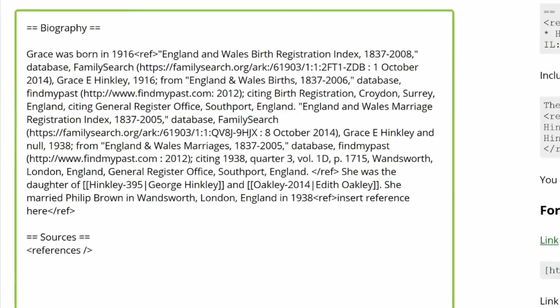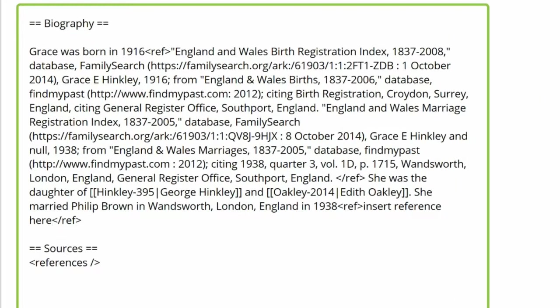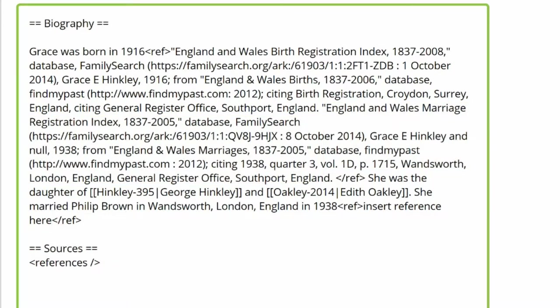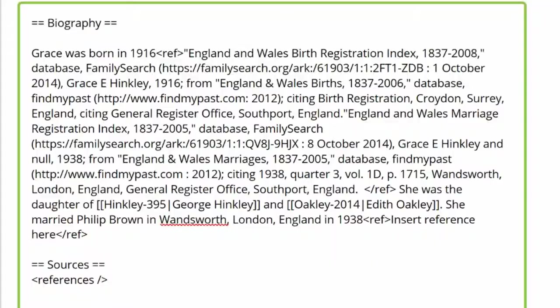Return to her profile and click Edit. As you study the Biography section, it becomes apparent that two sources are listed together and need to be separated. The second, a marriage record, should be cited with "She Married Philip Brown." The cause of Suggestion 865 in this instance is that the source is outside the inline citation.